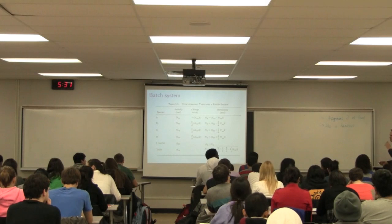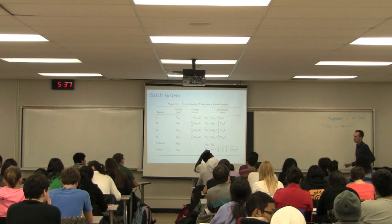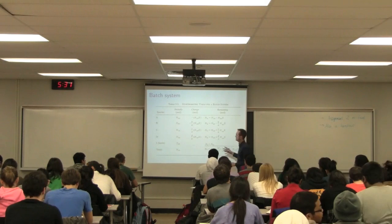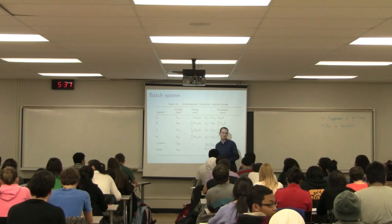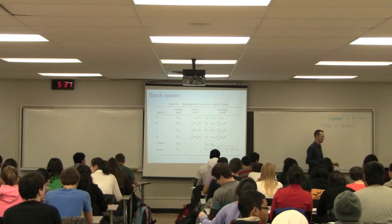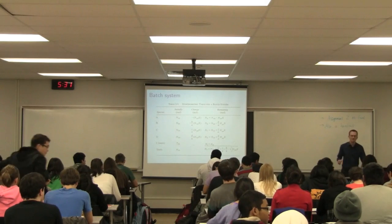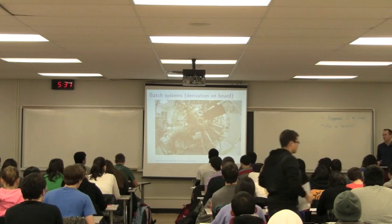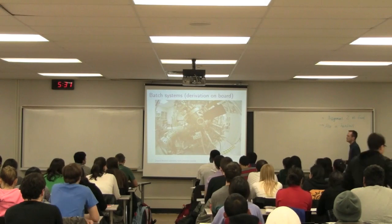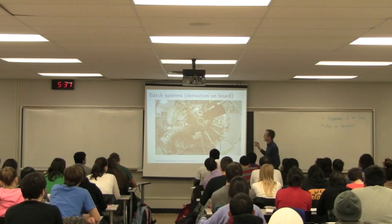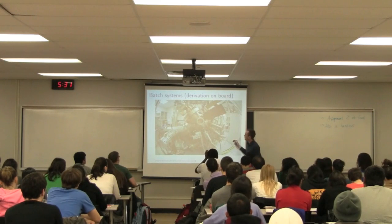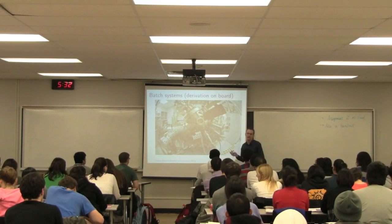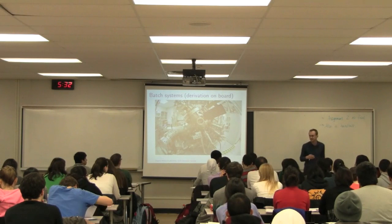We get started here with the batch system that we looked at last time. We derived this stoichiometric table for batch. Let's just briefly recall that this batch system — it's a great picture from Iowa National Laboratory. Their batch system here is extremely complex, with multiple devices and modes to measure the variety as we progress.